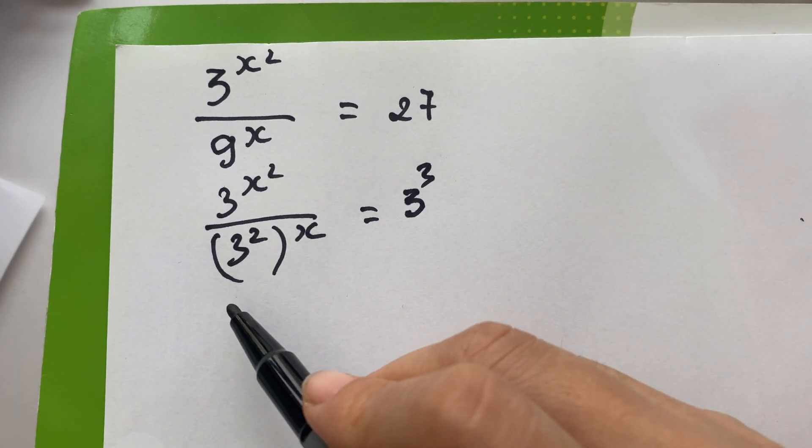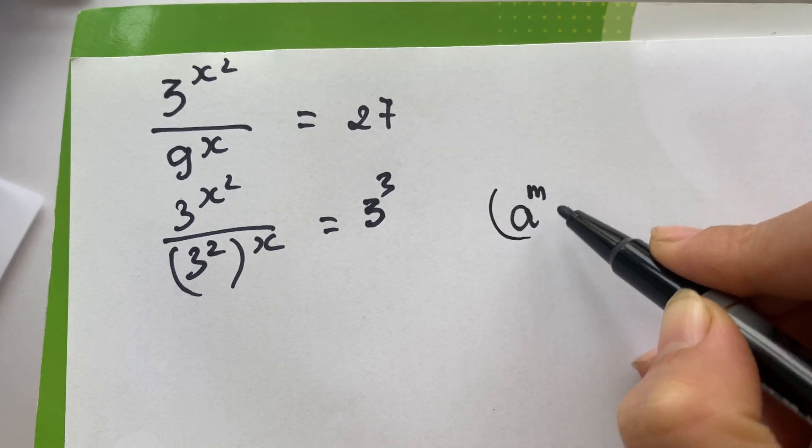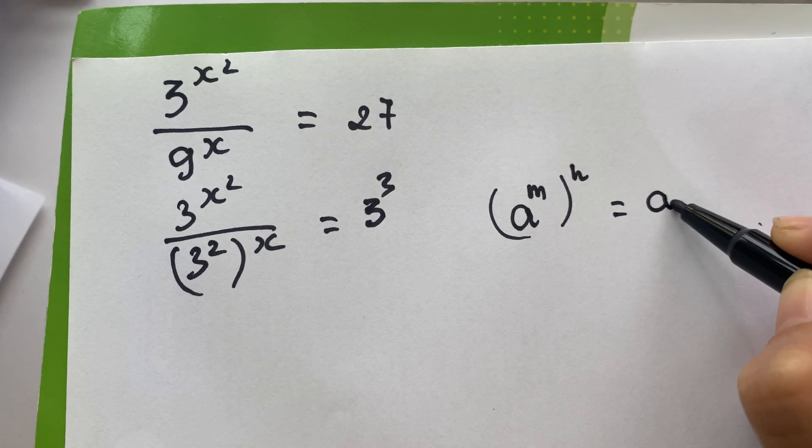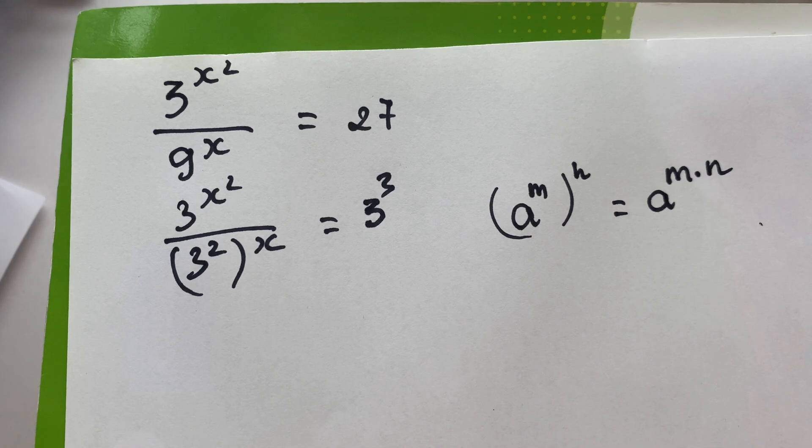And next we need to apply exponential rule: A power m bracket power n equals A power m times n.